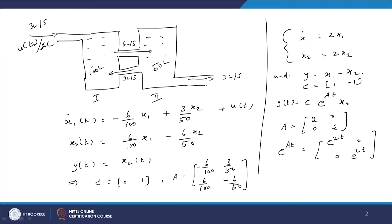Is this system observable — that is, can we get information about all the variables? We will see that the system is observable. From the two equations, if x2 is known, then by substituting we can also get the value of x1. So the system is observable.